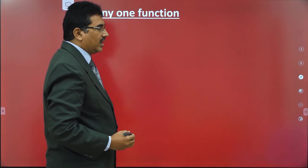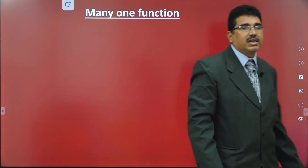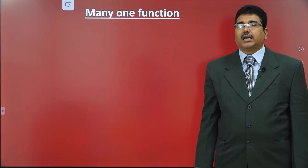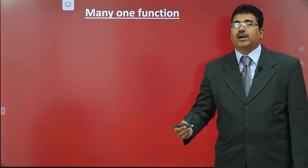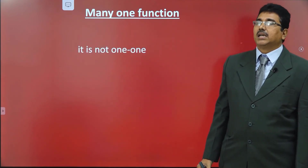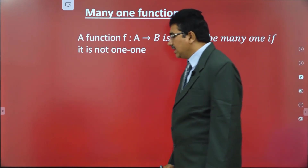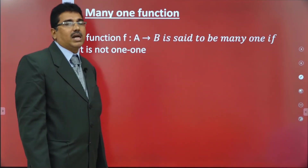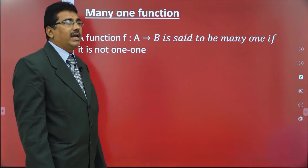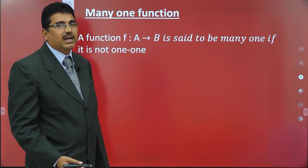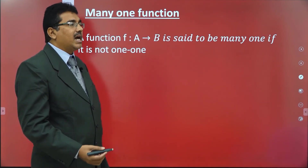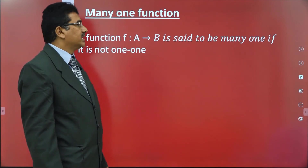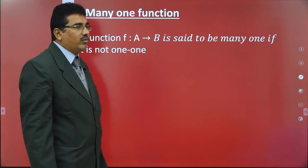Many-one function: many-one means many elements have one image. A function is said to be many-one if it is not one-one. One-one means distinct elements have distinct images; not one-one means many elements have one common image. So this is called a many-one function.